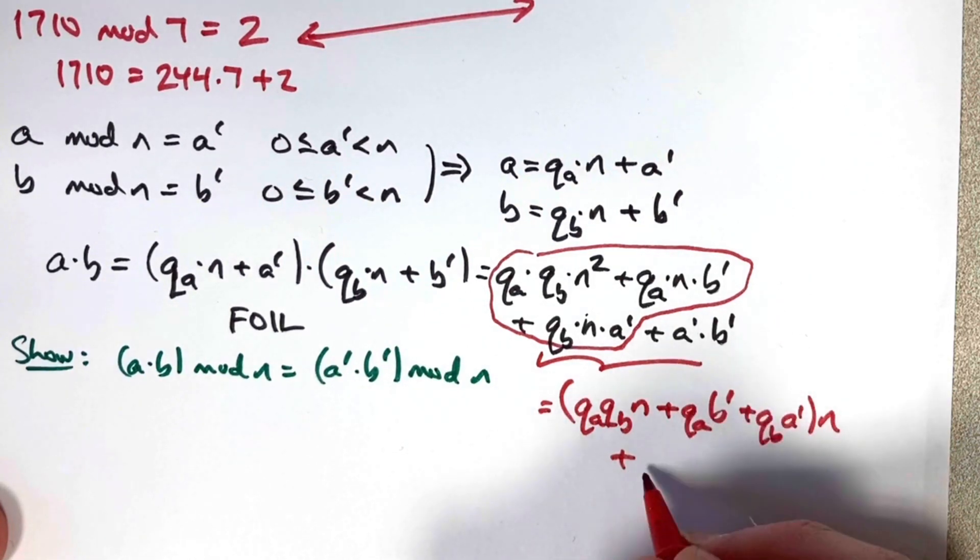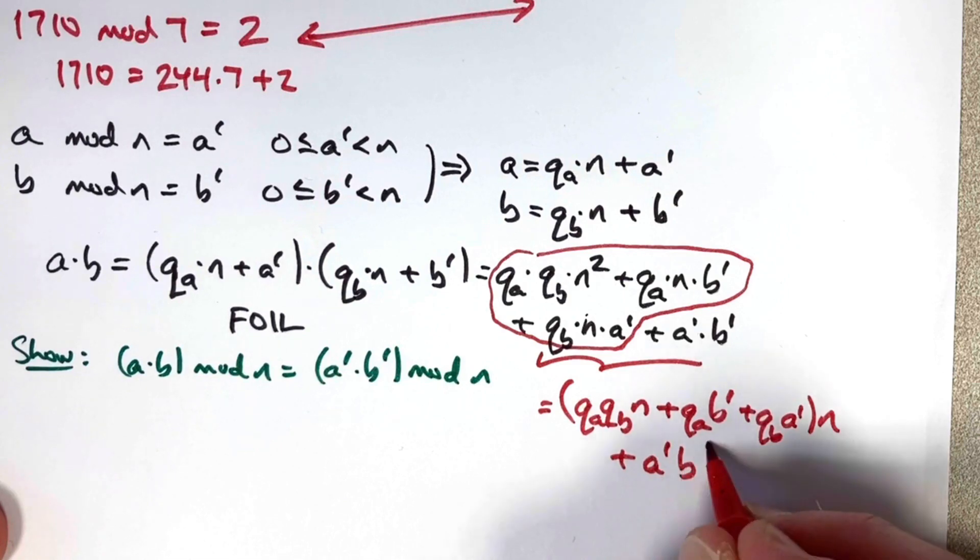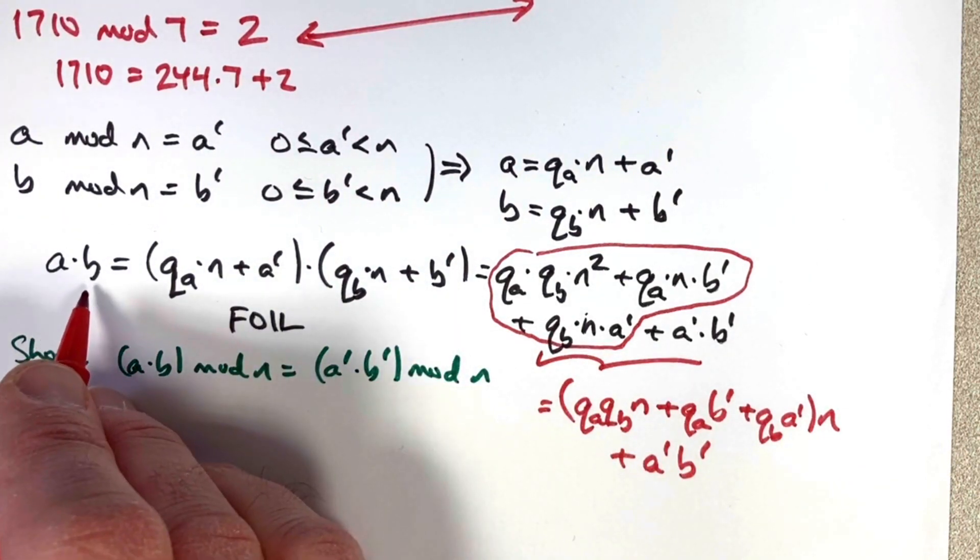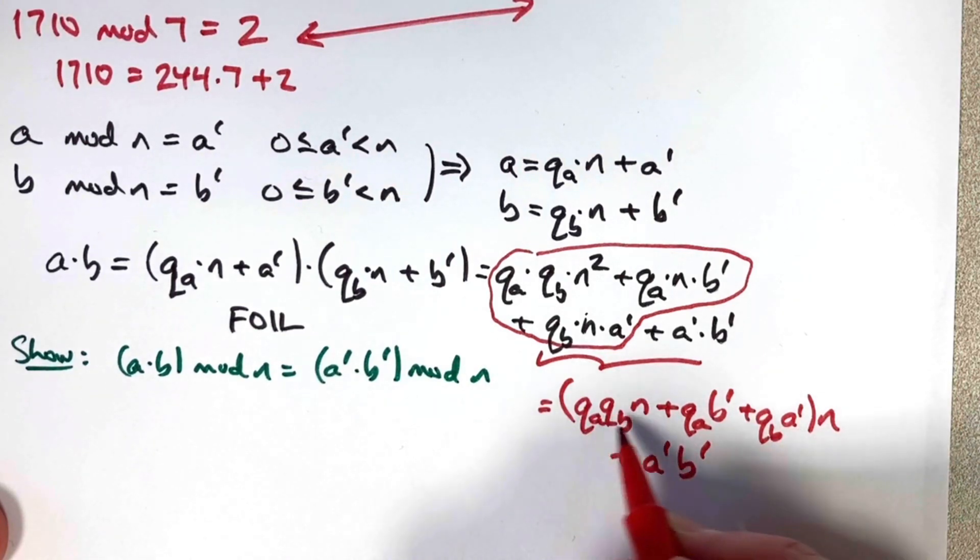Then this one has a plus q b times a prime and n has been factored out outside the parentheses. I need the n and then don't forget the a prime times b prime. This seems like it might be enough. I've got a times b equals something, a quotient, times n plus, what is this, a remainder?